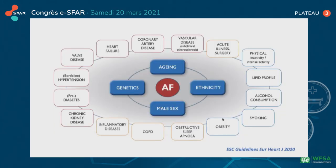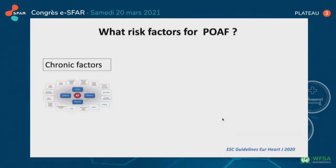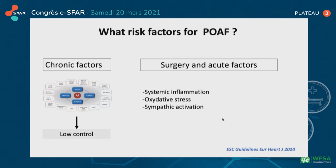Chronic factors are summarized in this slide. Stopping smoking and alcohol consumption could be suggested some weeks before surgery, but no other chronic factors could be controlled. While chronic factors of atrial fibrillation are frequent, they are in majority uncontrolled. In contrast, surgery-related acute factors like systemic inflammation and oxidative stress could be decreased using minimally invasive and fast surgeries.